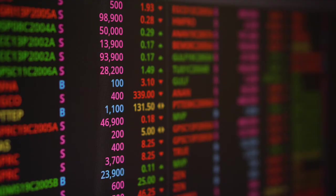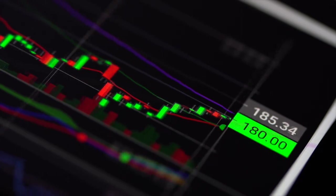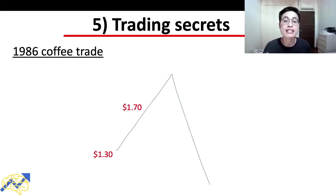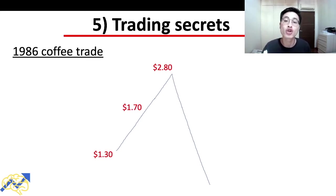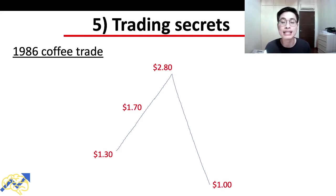Larry Hyde entered his position in the coffee market at around $1.30. After entering, coffee prices went up all the way to $1.70, at which point Larry Hyde exited and took profits. As it turned out, after he exited, coffee prices continued up all the way to $2.80. By exiting at $1.70, he missed out on a huge portion of the move upward. If he had stayed all the way to $2.80, he would have more than doubled his profits. But after reaching $2.80, coffee prices fell all the way back down to $1.